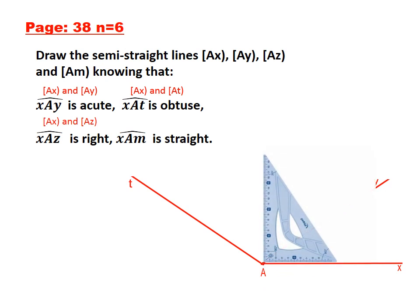To draw AZ, we should use the set square. Now let's draw AZ. AZ is perpendicular to AX because XAZ is a right angle.